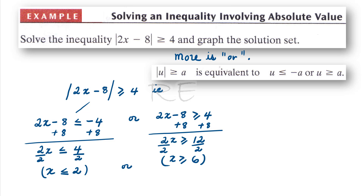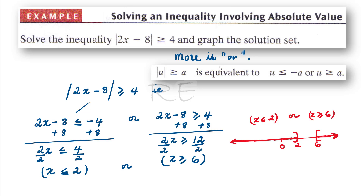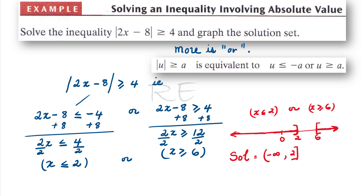So we have x less than or equal to 2, or x greater than or equal to 6. On the number line, at 2 we have a close bracket and take all values to the left, since 2 is included. At 6, an open bracket and we take all values greater than or equal to 6. In interval notation, the solution is from negative infinity to 2, close bracket, union, open bracket at 6 to positive infinity.